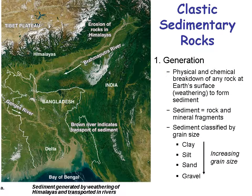Here's a picture of Bangladesh with the Ganges River Delta coming down into the Bay of Bengal. Sand, gravel, silt, and clay come off the Himalaya Mountains down the Ganges and Brahmaputra rivers and get deposited. The generation stage is where you get the physical and chemical breakdown of any rock as it weathers off some other igneous or metamorphic rock, creating different size grains that are further broken up during transportation.